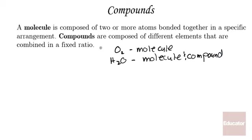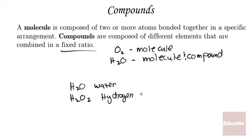Compounds are composed of different elements combined in a fixed ratio. This is very important because if I look at water, H2O, and then H2O2, hydrogen peroxide, I notice that these are both composed of hydrogen and oxygen. However, they have very different properties. Water is the solvent of life — you drink it, your body is made largely of water — whereas hydrogen peroxide has entirely different properties and is good for treating wounds. So it's not just the atoms that are in a compound that matter; it's the ratio and the order that they're combined in.